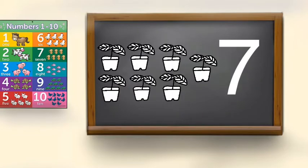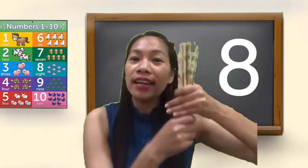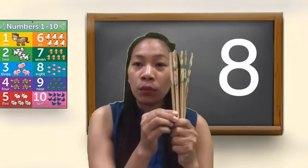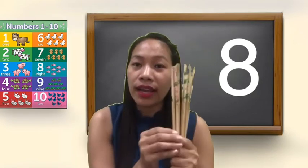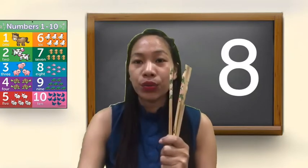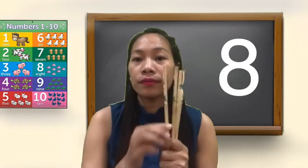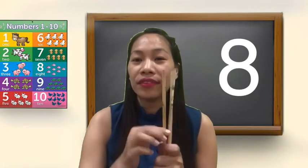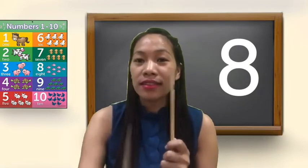6 means there will be 6 objects. 1, 2, 3, 4, 5, and 6. 7 means 7 objects. Now, 8 — let us count again. How many objects will be here? Let us count together: 1, 2, 3, 4, 5, 6, 7, 8 — 8 objects.